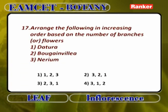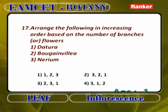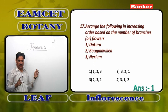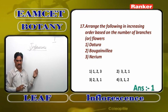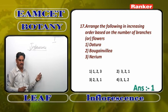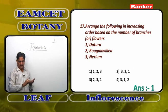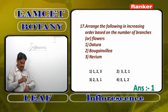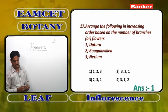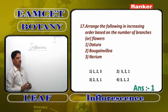Arrange the following in increasing order based on number of branches: datura, bougainvillea, nerium. Answer: 1, 2, 3. Datura is solitary cyme — 0 branches. Bougainvillea: after the main axis ends as a flower, 2 branches develop, they also end as flowers — 2 branches. Nerium has many branches. So increasing order: datura (0), bougainvillea (2), nerium (many).